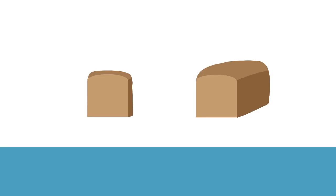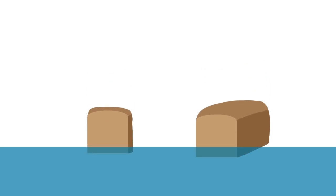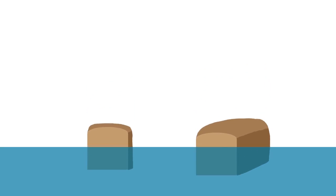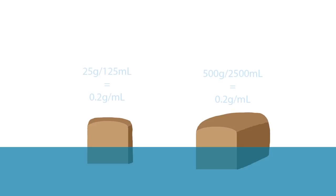Let me give you an example. Say if you have a slice of bread and a loaf of bread — both float, even though the loaf of bread is obviously bigger. This is because the loaf and the slice of bread are made up of the same thing, so they have the same density.